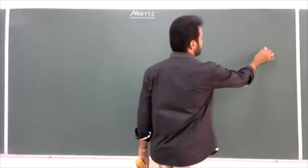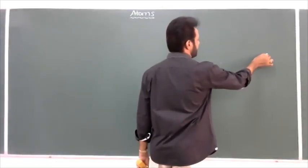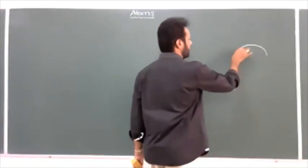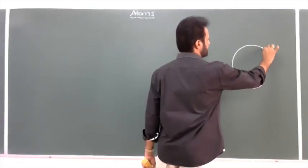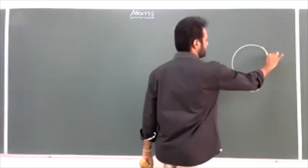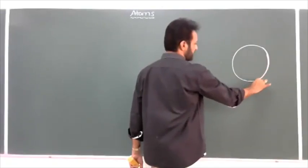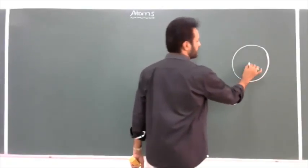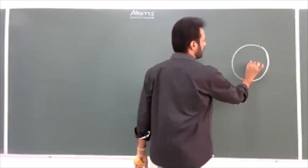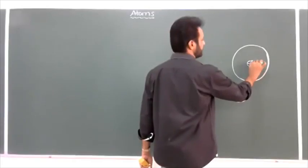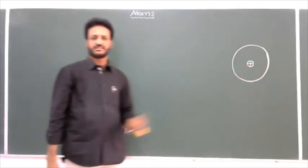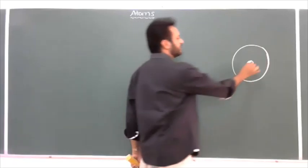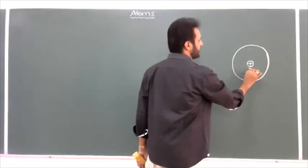As already mentioned, the central part of the atom where the total positive charge and almost all the mass of the atom is concentrated is called the nucleus. So the central part or core of the atom is called a nucleus. It is a nucleus having a positive charge, and the atomic number of this nucleus is equal to Z.